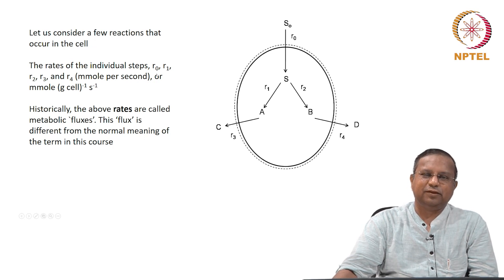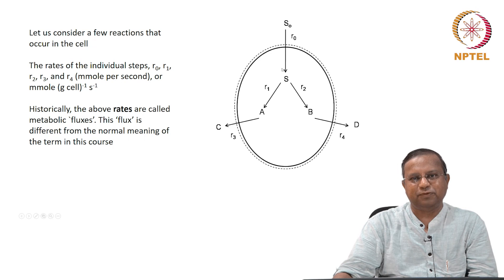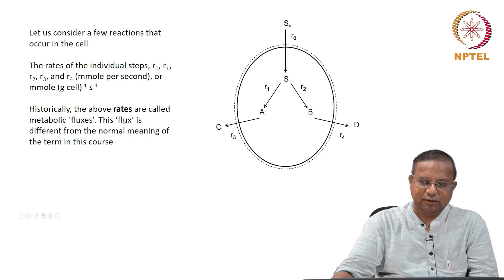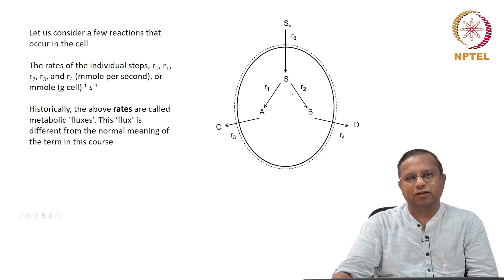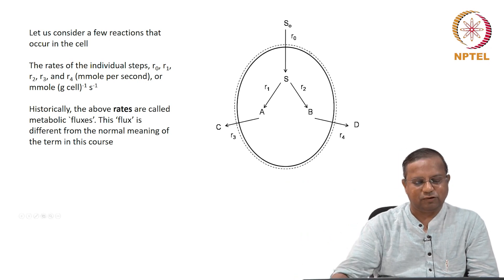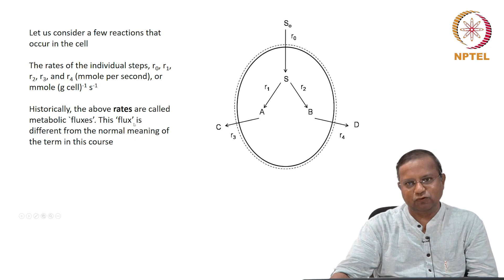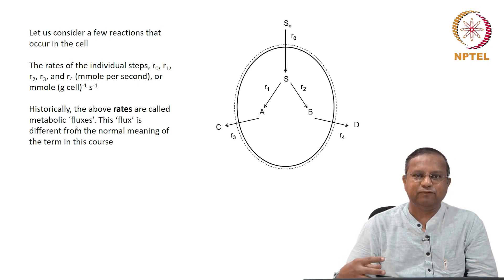Although these are rates, they have been called fluxes or metabolic fluxes from a historical perspective — that is the term that began and has stuck. Note the unit here is millimole per second. We will call this flux as an exception in this course in this context, fully realizing that we are going to change this definition of flux very soon to fit into the main definitions of the course.